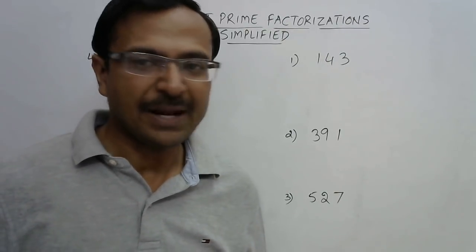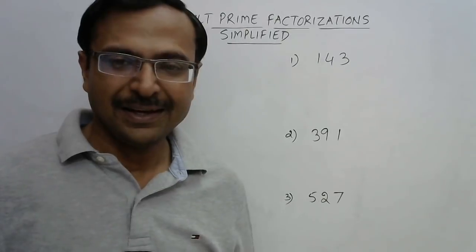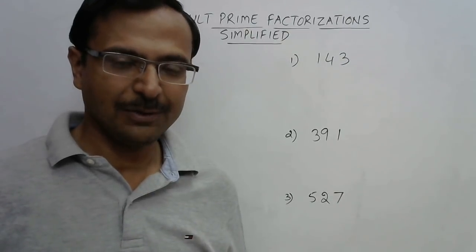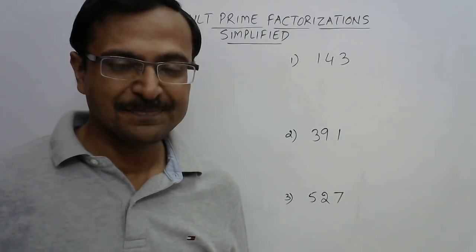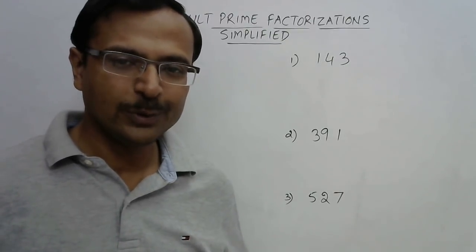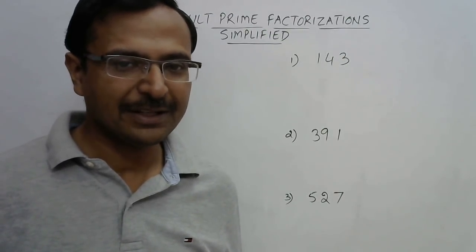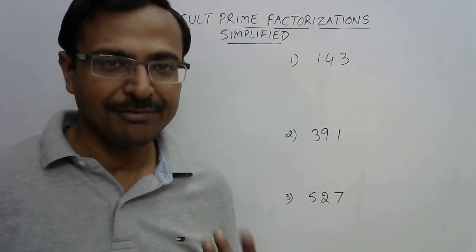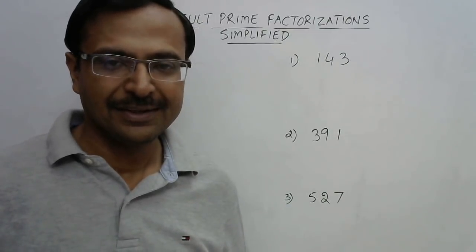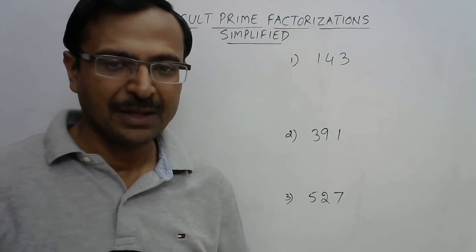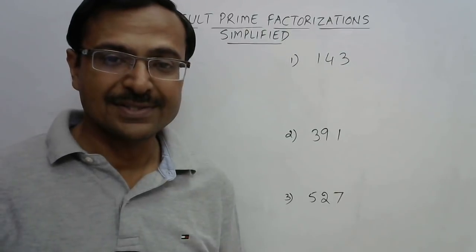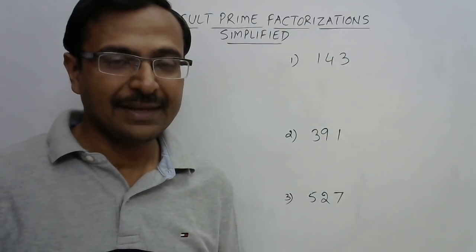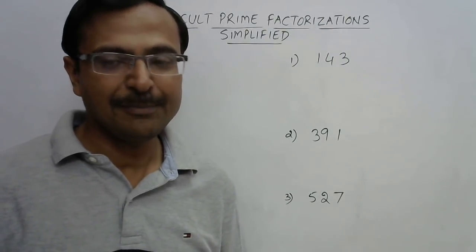Hello dear friends. Prime factorization can be a little bit tricky when the numbers involved in the prime factors are large. If you have a number which is divisible by 2, 3, 5, 7, or even 11, students can make the prime factors very easily.